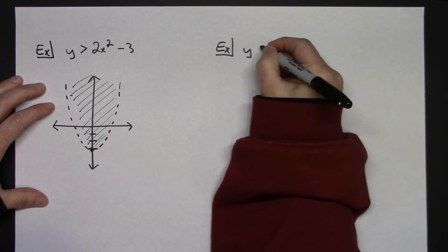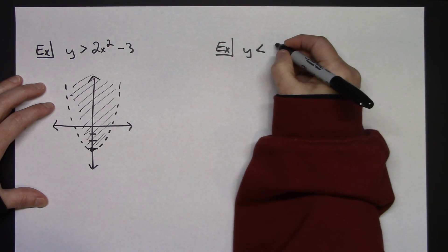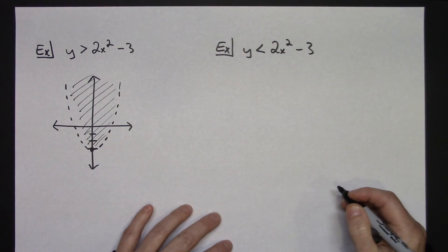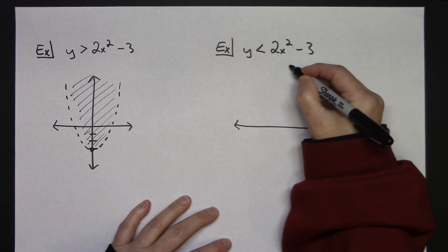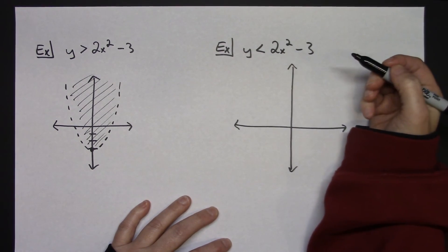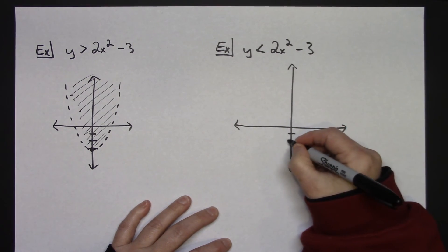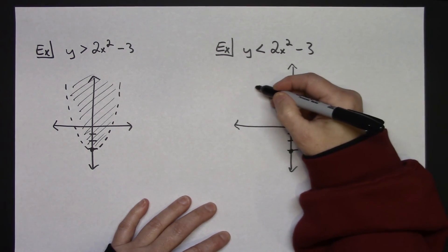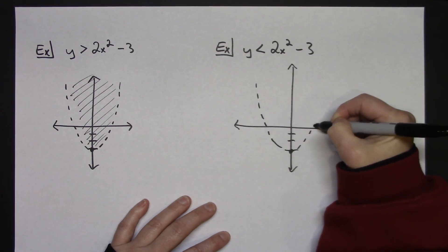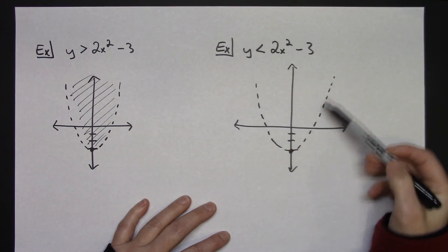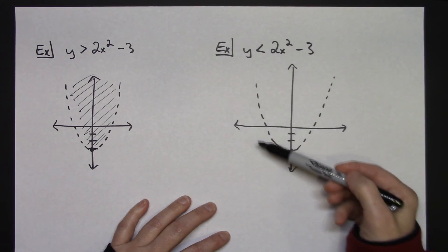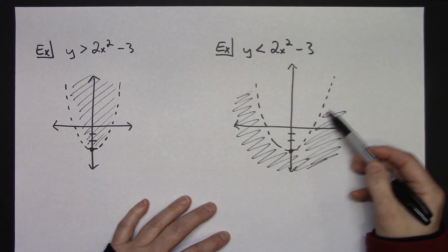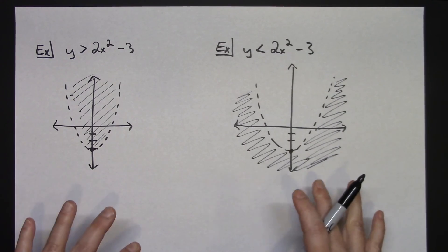For y is less than 2x squared minus 3: it's still an upright parabola shifted down 3, with a dotted line since it's a strict less than. With less than and an upright parabola, you shade below — the region outside and underneath the curve.